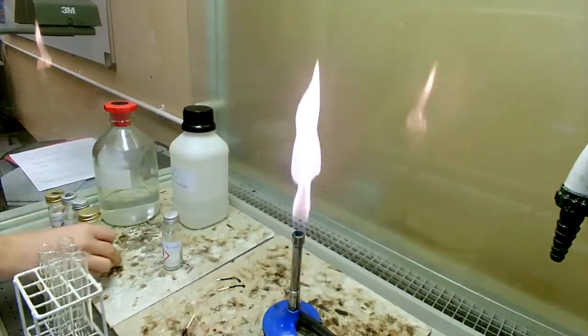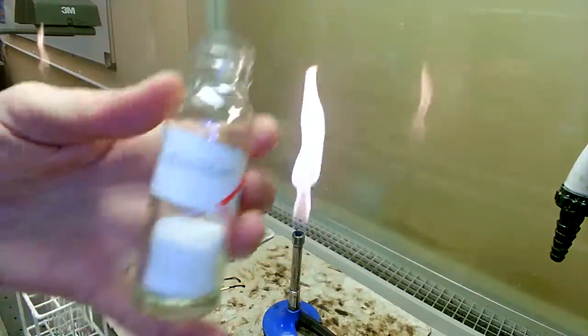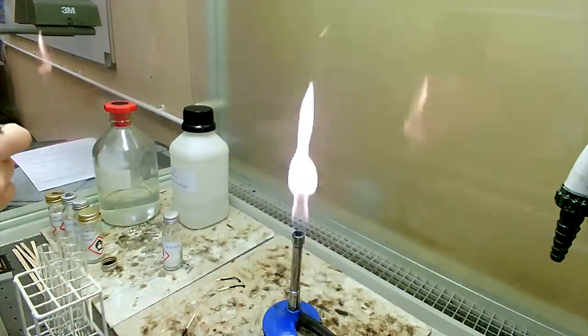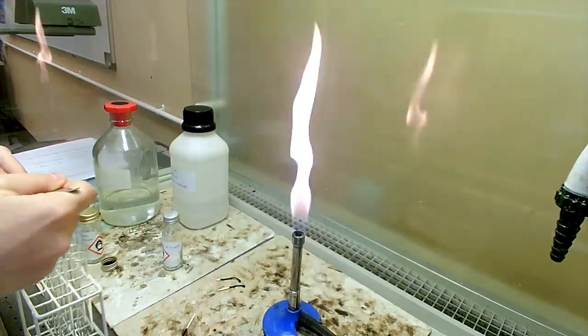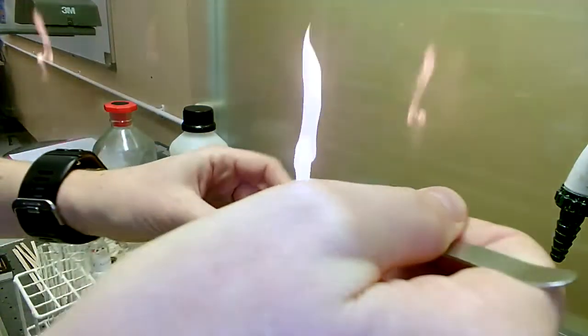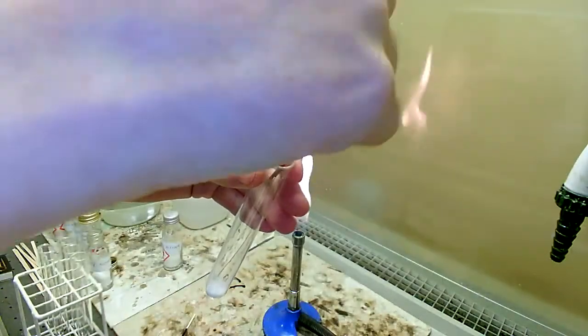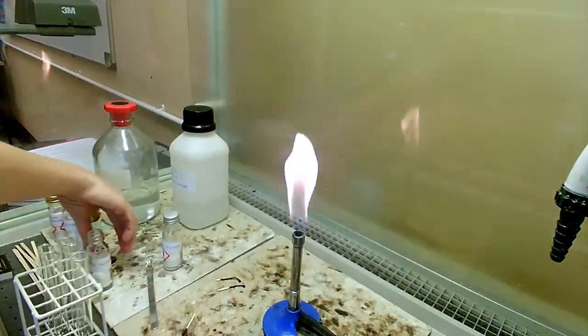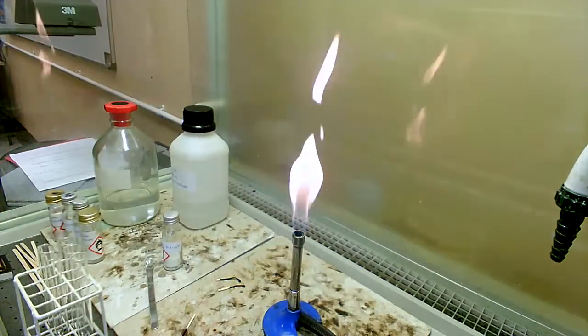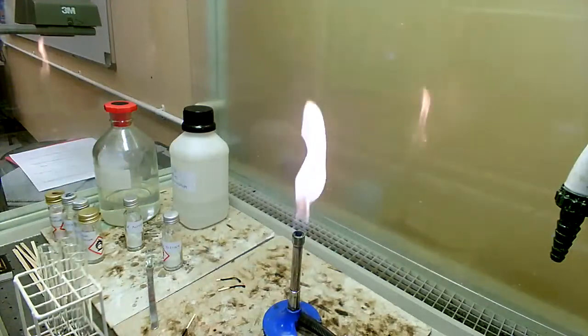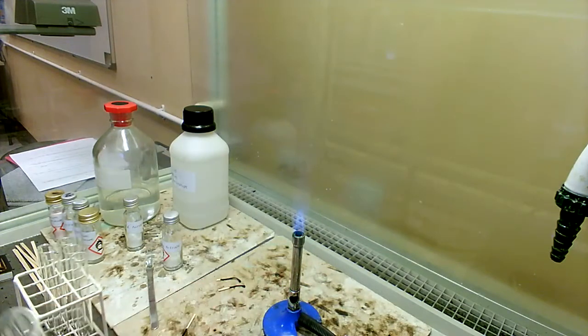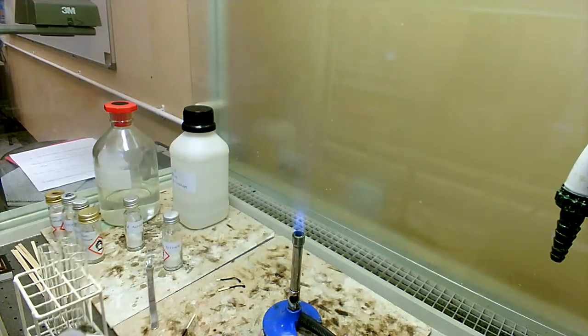I'm going to start with potassium nitrate, white powder. I'm going to pop a spatula of it into a test tube, put the lid back on my bottle, and then I'm going to heat in a blue flame quite strongly. I'm going to have a glowing splint at the ready.